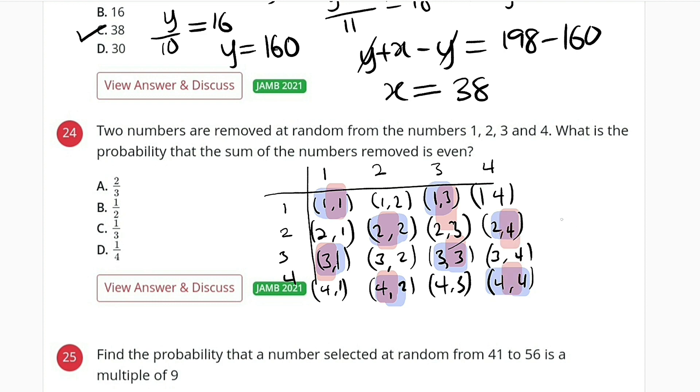So this, because we are talking about probability, the expected outcomes is 8 out of the total outcome, which is 4 times 4, 16. And 8 divided by 16 is therefore just 1 over 2 of the total numbers, which is option B.